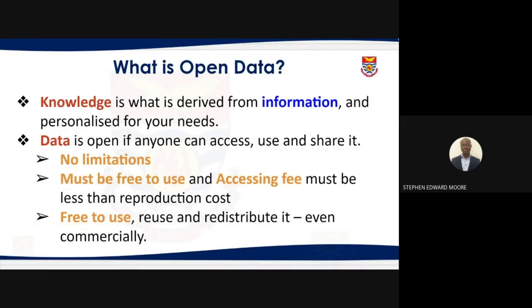Data is open if anyone can access, use, and share it — meaning there are no limitations. It must be free to use, and the access fee must be less than the reproduction cost. This doesn't necessarily mean you cannot put a token on it; it just means the cost must be less than what someone would spend reproducing the data themselves. It must be free to use, reuse, and redistribute, even commercially.